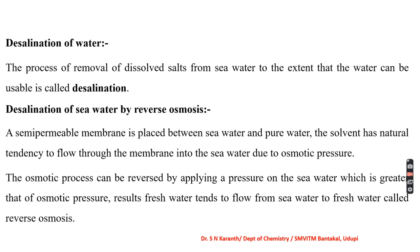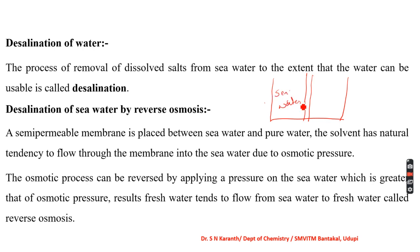In the reverse osmosis method, we use a semi-permeable membrane. This membrane is placed between the sea water and the fresh water. The natural tendency is for the solvent to flow through the membrane into the sea water — fresh water naturally migrates towards the sea water. This is the natural direction.